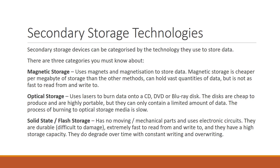The first is magnetic storage. This uses magnets and magnetization to store data. Magnetic storage has the benefit that it is cheaper per megabyte to produce and it can hold vast quantities of data, but it is mechanical, which means it is not as quick to read from or to write to.